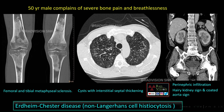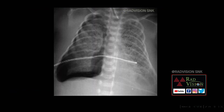Femoral and tibial metaphyseal sclerosis, cysts with interstitial septal thickening, along with hairy kidney sign and coated aorta sign — definitely suspect Erdheim-Chester disease, which is non-Langerhans cell histiocytosis. A similar spotter can be kept where there will be symmetrical diaphyseal sclerosis in long bones, called progressive diaphyseal dysplasia or Camurati-Engelmann disease.